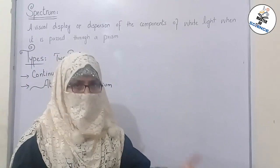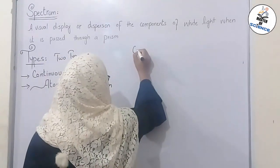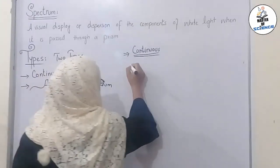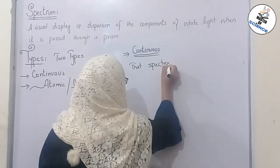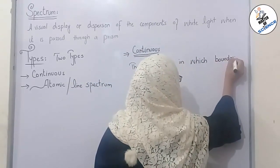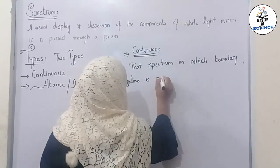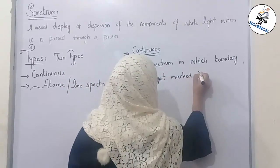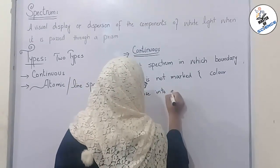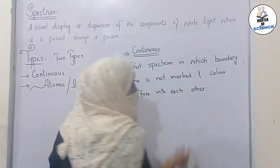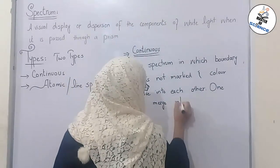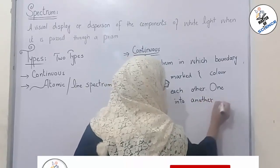Continuous means without cutting or without any splitting. The proper definition of continuous spectrum: that spectrum in which boundary line is not marked and colors diffuse into each other — meaning one color merges into another color without any dark space between them.